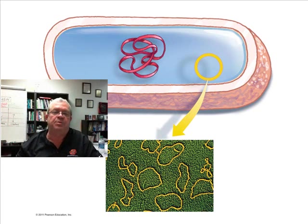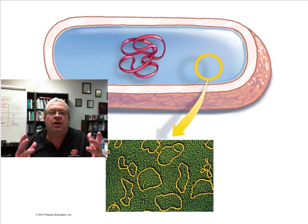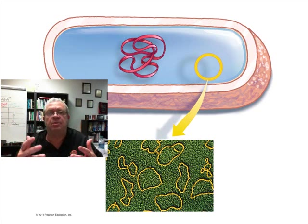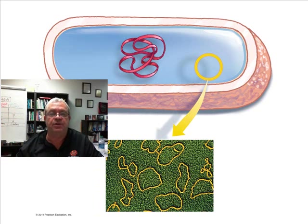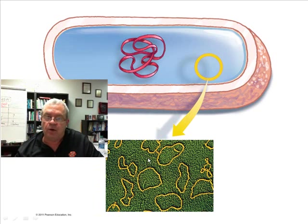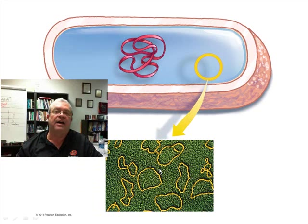Any prokaryotic cell can have plasmids. What good are they? They've got genes that are helpful in certain environments. Bacteria cells can multiply these plasmids and pass them around. Plasmids serve a useful function for the bacteria cells, and also a very useful function in biotechnology, as we'll see. This arrow down here indicates those are plasmids — small circles of DNA found only in prokaryotic cells.